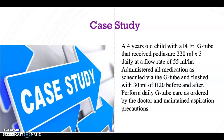Today we have a four-year-old child with a 14 French G-tube that receives PediaSure 220 ml three times daily at a flow rate of 55 ml per hour. Administer all medications as scheduled through the G-tube and flush with 30 ml of water before and after. Perform daily G-tube care as ordered by MD and maintain aspiration precautions.